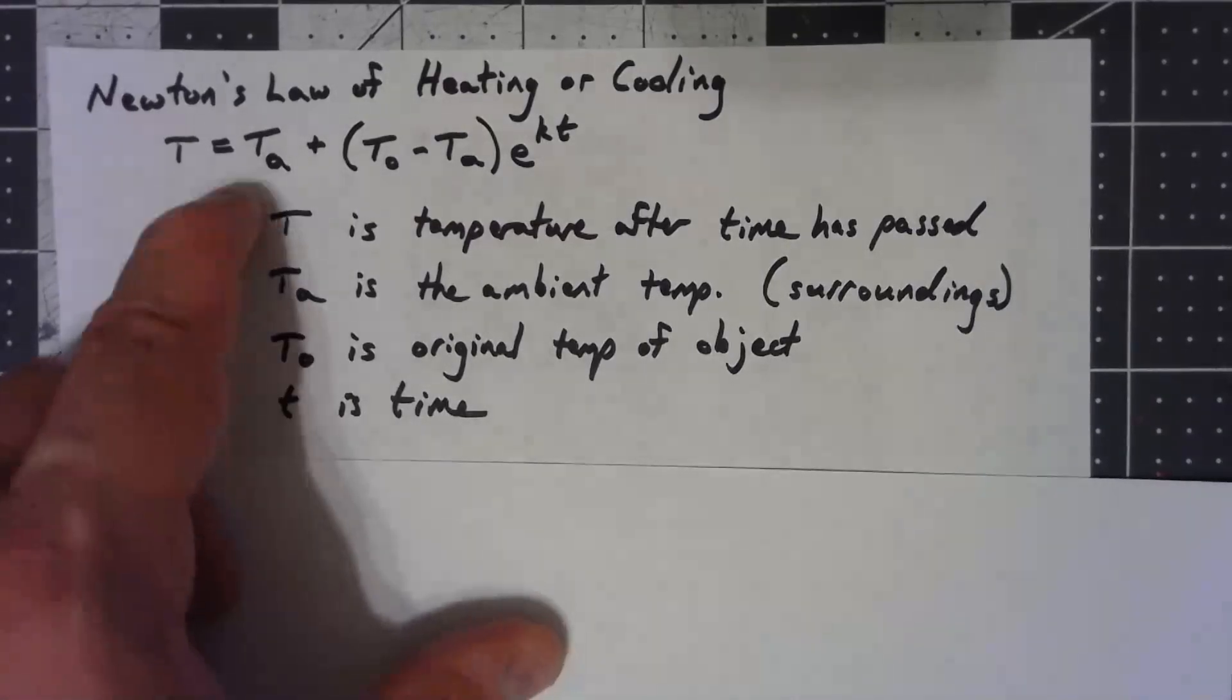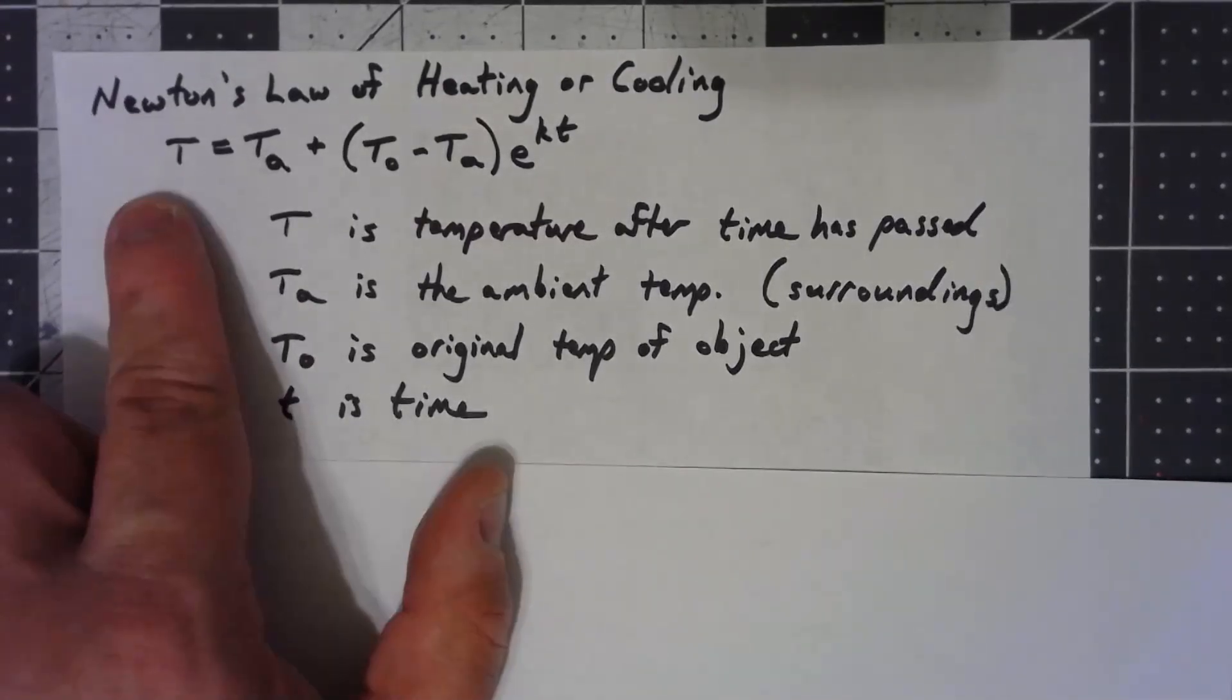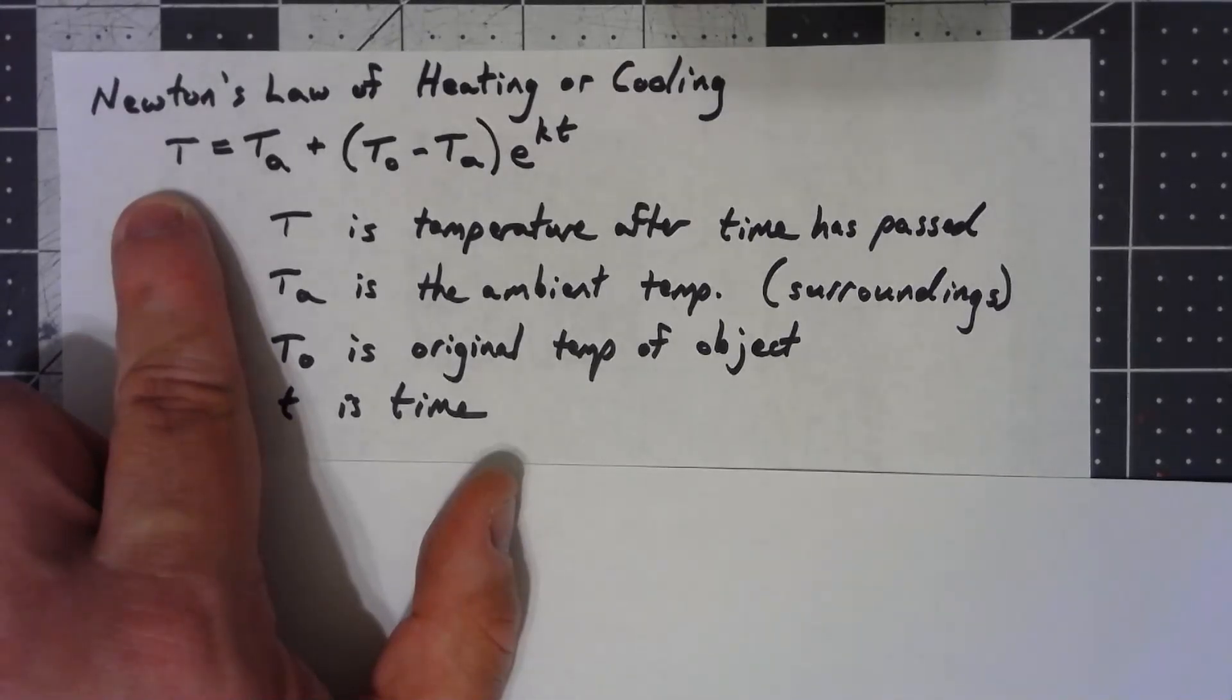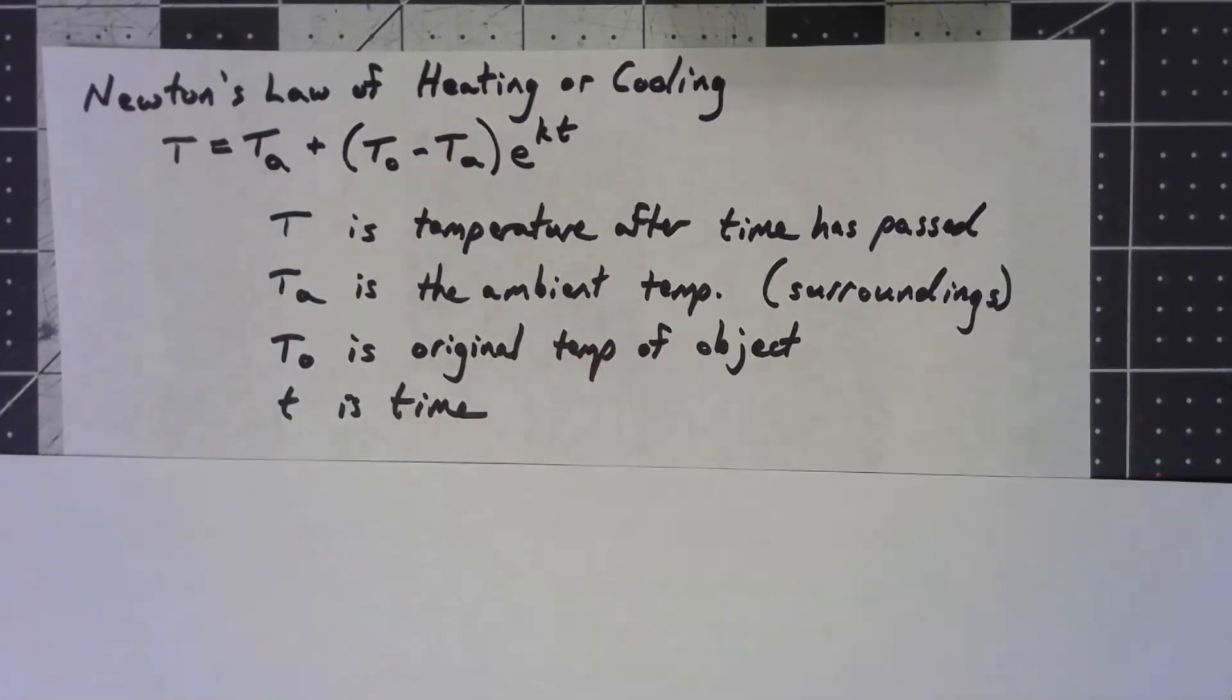The hardest thing to figure out is that we've got four different T's in this formula. Capital T is the temperature after some time has passed. T sub A is what we call the ambient temperature, the temperature of the surroundings. If you're putting something in an oven, it's the oven temperature. If you're putting something in a refrigerator, it's the refrigerator temperature. If you've got something in a room, it's the temperature of the air in the room.